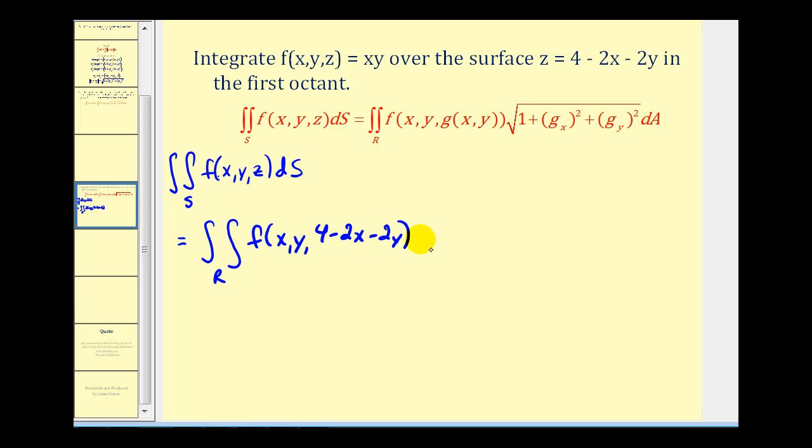And then we have our Jacobian or extra integrating factor: square root of 1 plus (∂g/∂x)² plus (∂g/∂y)². That's going to be square root of 1 + (-2)² + (-2)². Here we'll integrate with respect to y first and then x.